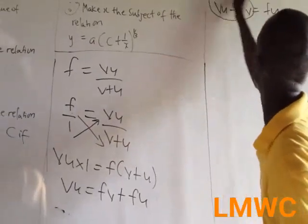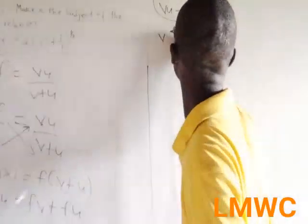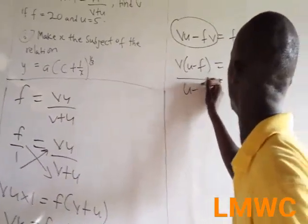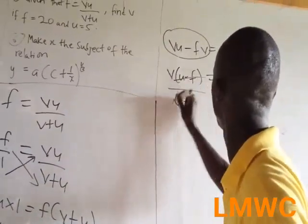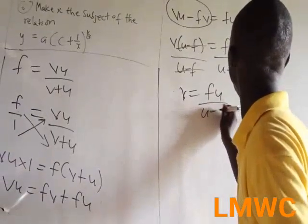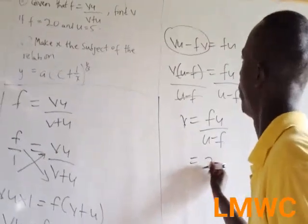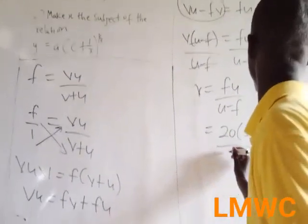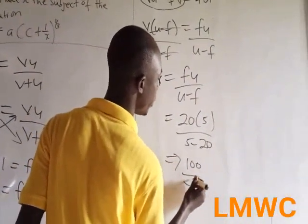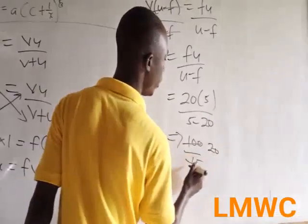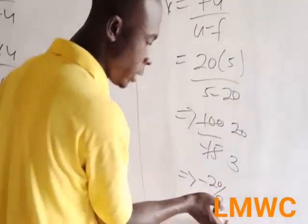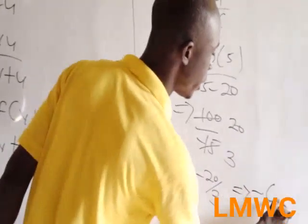So now you factorize v. We get v(u minus F) = F·u. And since we have this, you divide through by (u minus F). So v = F·u over (u minus F). Now, F = 20 and U = 5. So we have 5 minus 20 in the denominator: 100 over negative 15. Simplifying: 5 goes into 100 twenty times, 5 goes into 15 three times. So we have negative 20 over 3.